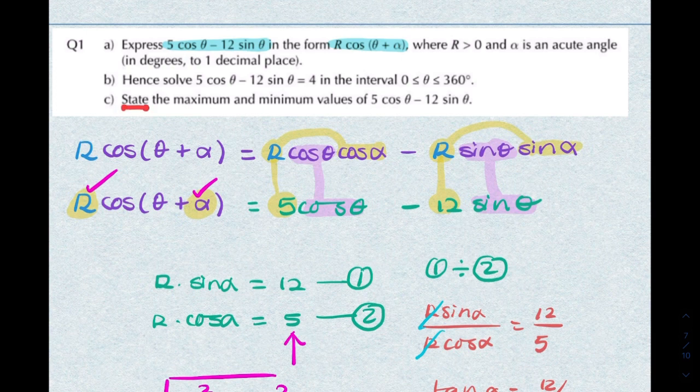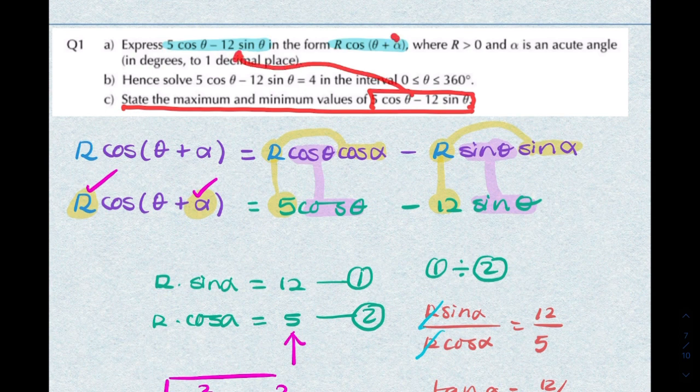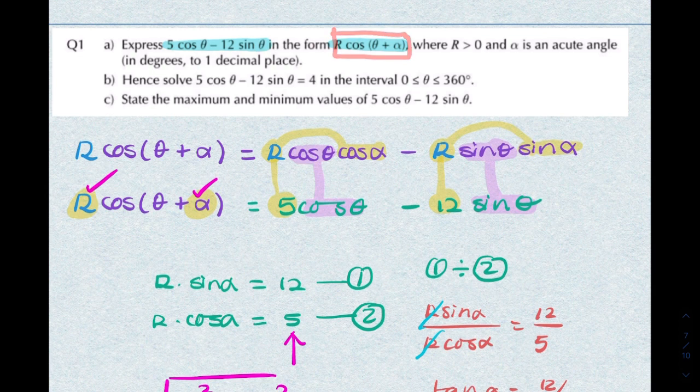The final part says state the maximum and minimum values of this. Now this is the same as that, so therefore it's the same as that, and the minimum and maximum for this will be plus and minus R.